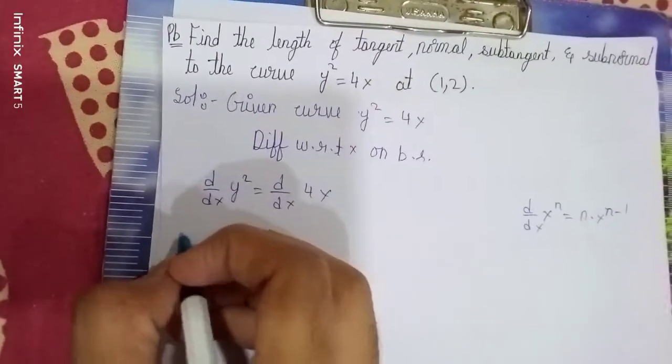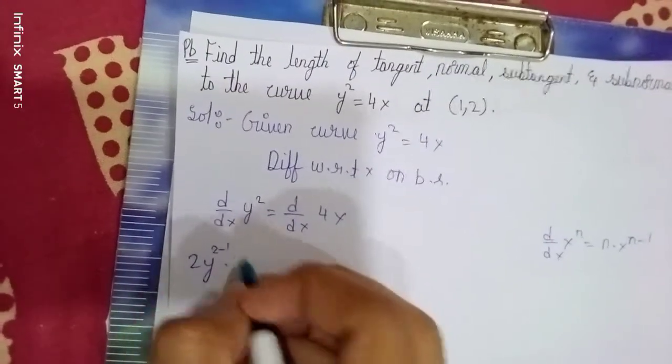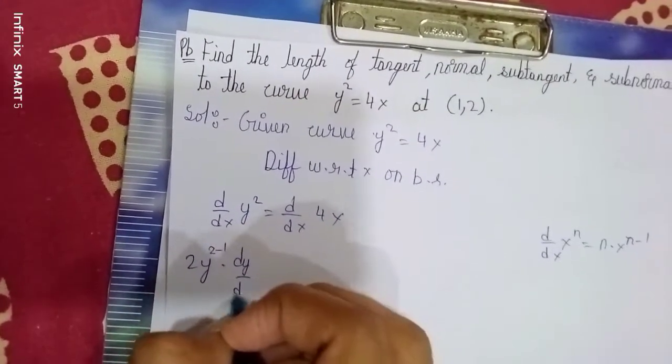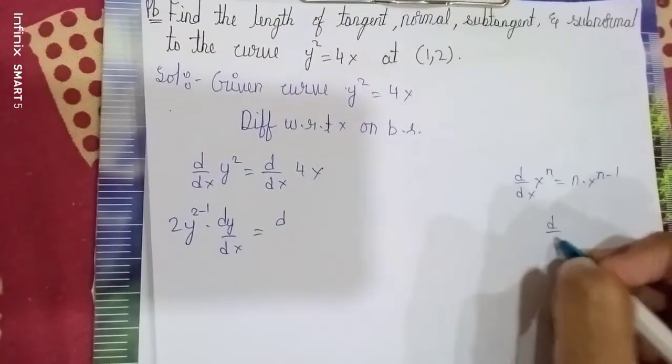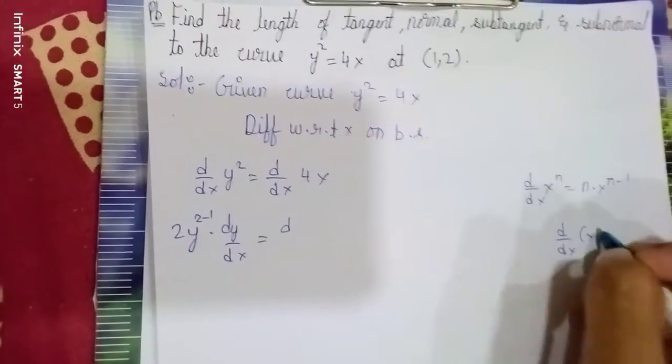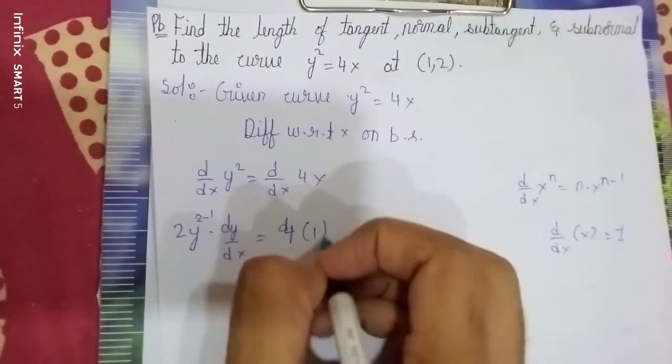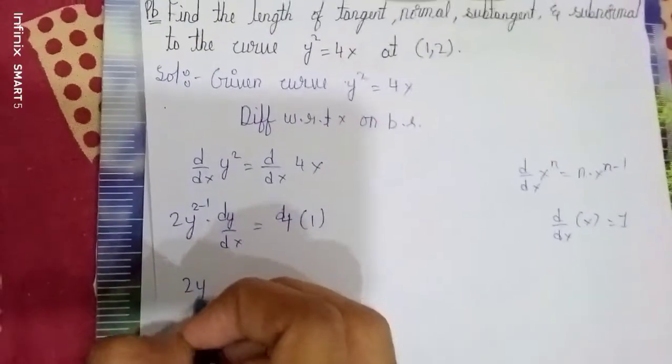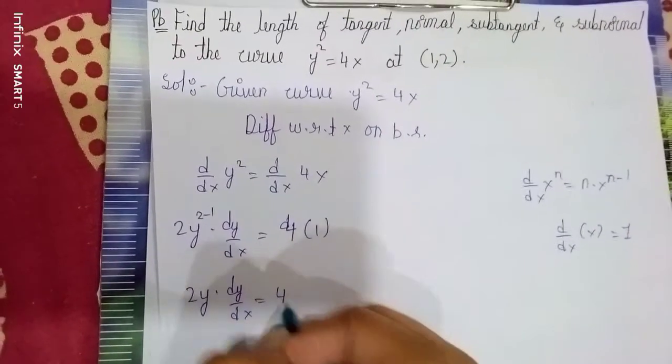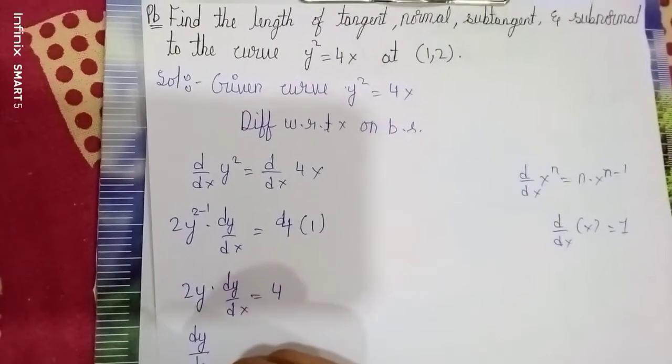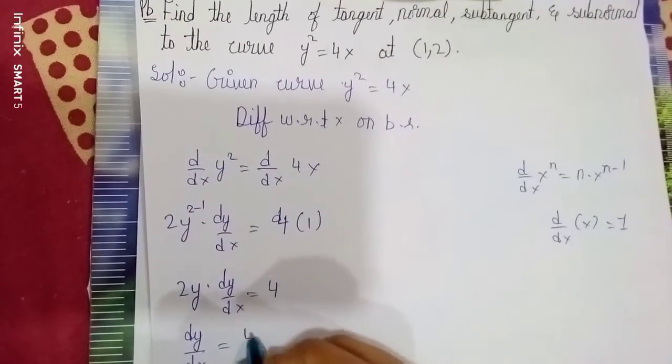So 2y^(2-1) · dy/dx = 4, in the form of d/dx of x = 1. So 4 as it is outside, 1. So 2y dy/dx = 4. dy/dx = 4/(2y) = 2/y.